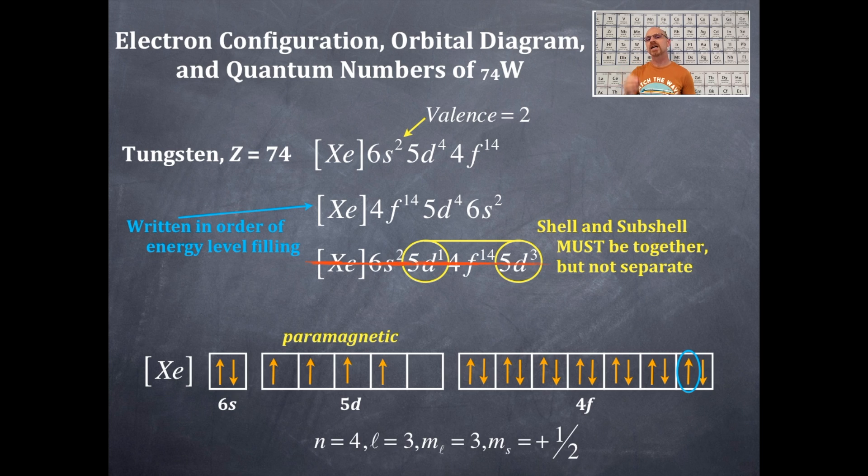Here are the set of four quantum numbers. Now, it is in the 4f-orbital type. Therefore, n is equal to 4. The f-type orbitals, so s's are, excuse me, s's are 0. P's are 1. D's are 2. f's are 3, so therefore, l of 3 gives you an f-type orbital.